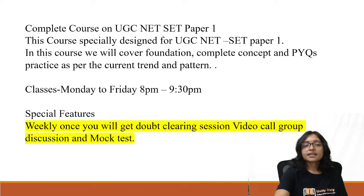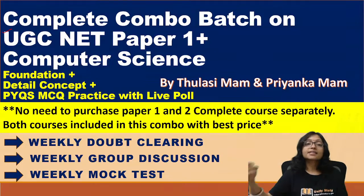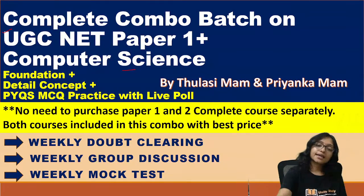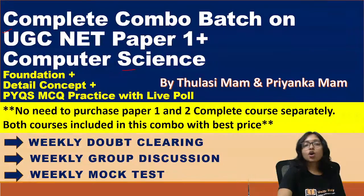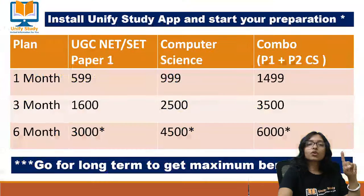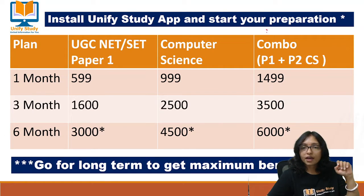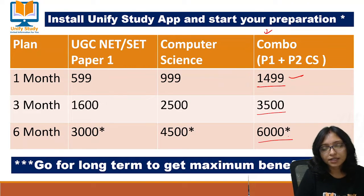The next option is the Combo. For those planning to take both Paper 1 and Paper 2 together, the Combo is the best plan. The platform will show three courses: Combo, Paper 1, and Computer Science. If you are planning for both, definitely go for the Combo. For the Combo, the pricing is: one month is ₹1499, three months is ₹3500, and six months is ₹6000. You can see the full pricing in front of you.